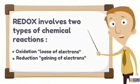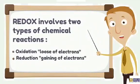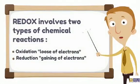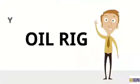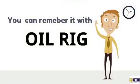Redox involves two types of chemical reactions. Oxidation, which is loss of electrons. Reduction, which is gain of electrons. I could give you a hint. You could remember it with oil rig. Oxidation is loose. Reduction is gain.